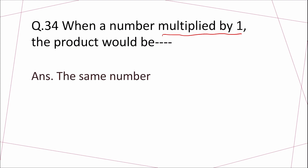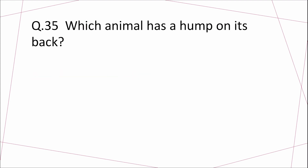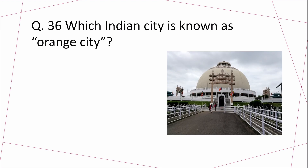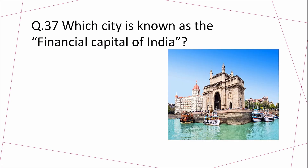Question 35: Which animal has a hump on its back? Answer: Camel. Question 36: Which Indian city is known as the Orange City? Answer: Nagpur. Question 37: Which city is known as the financial capital of India? Answer: Mumbai.